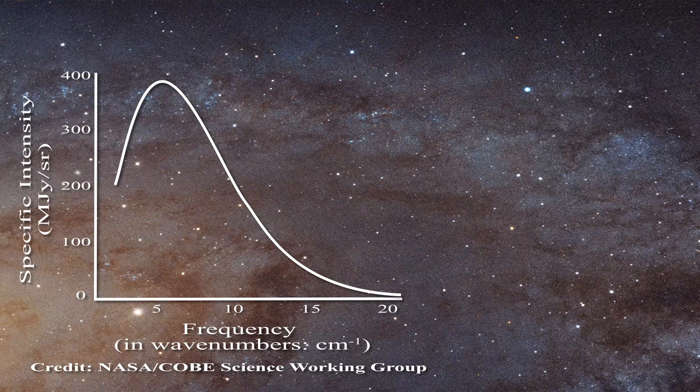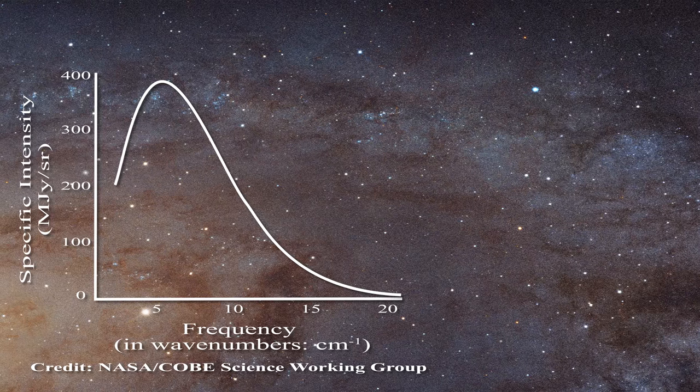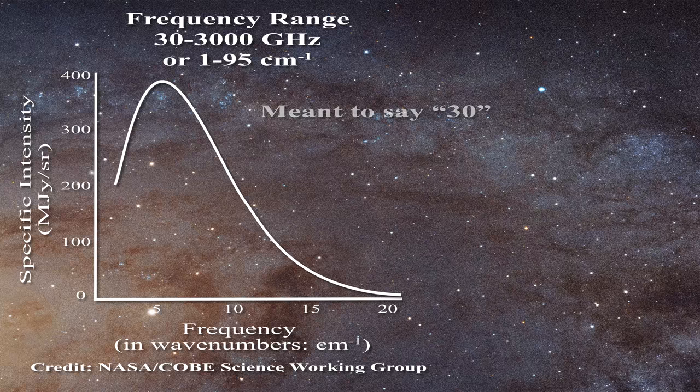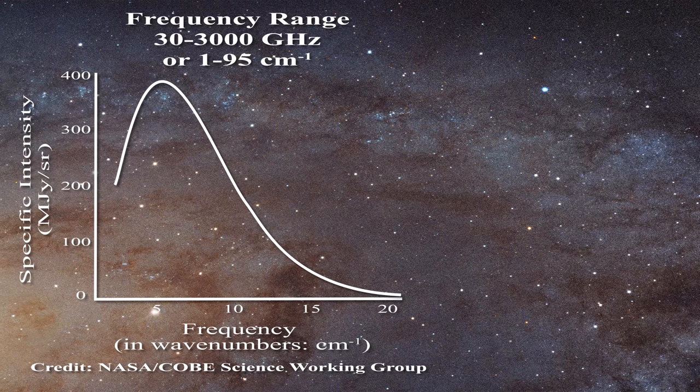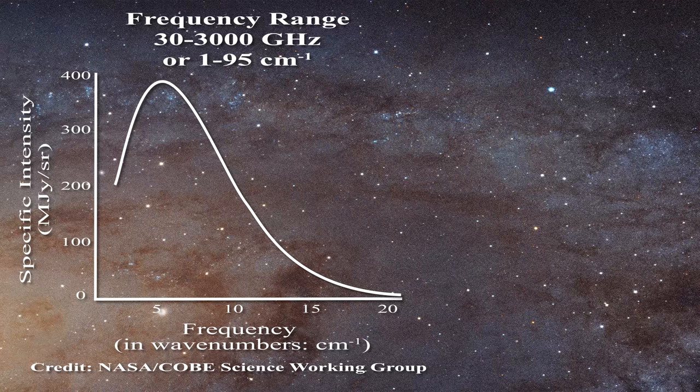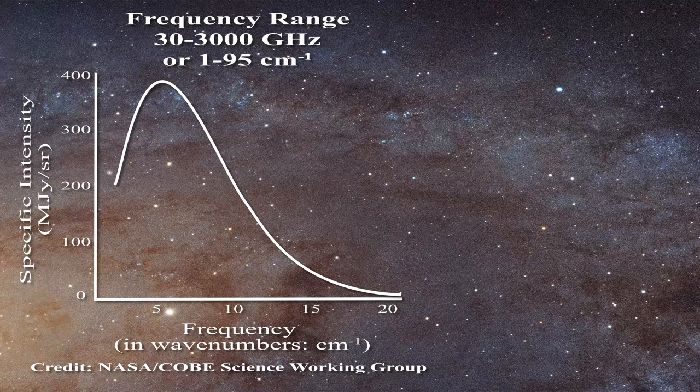In any event the FIRAS horn was said to sample the sky over a phenomenal range from 3 to 3000 gigahertz or 1 to 95 reciprocal centimeters. The key point here is that still to this day scientists have never been able to build a microwave detector which is sensitive over such a great frequency range. It is a physical impossibility. It stands to reason therefore that the performance of this horn was never properly documented on earth over this range of frequencies prior to launch.